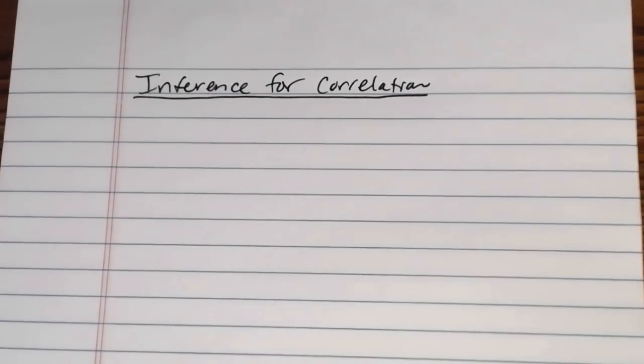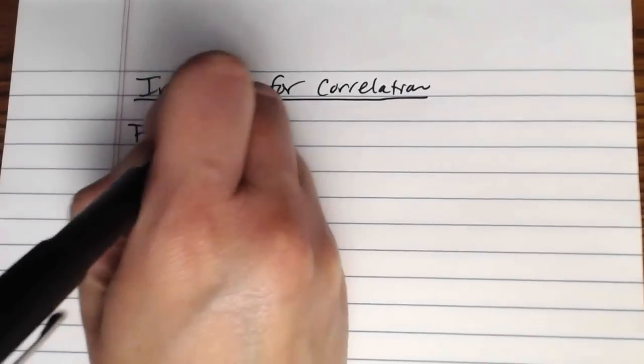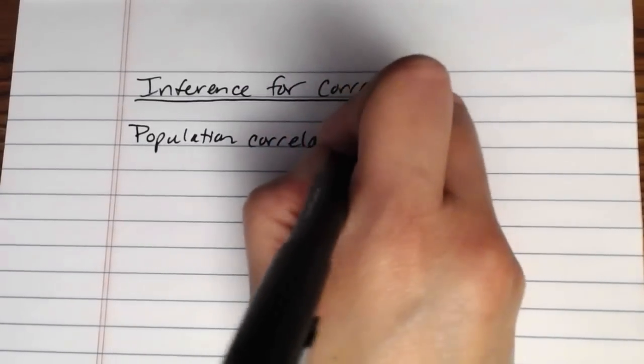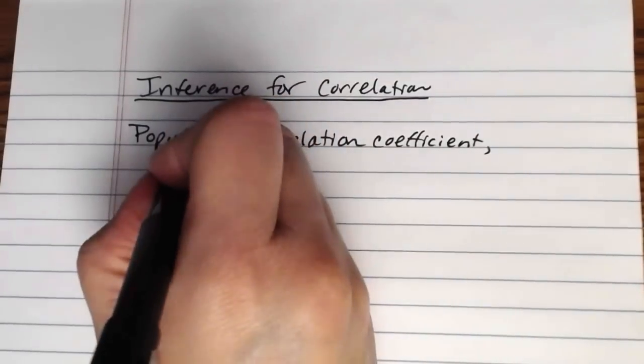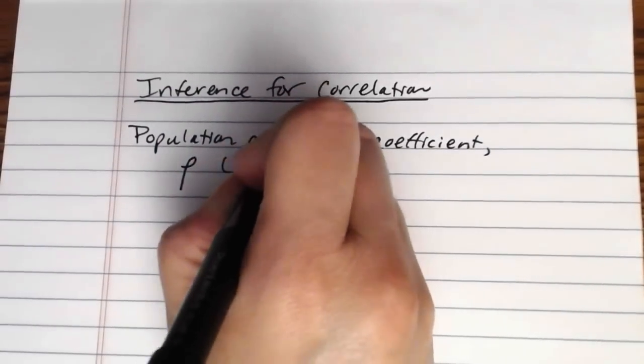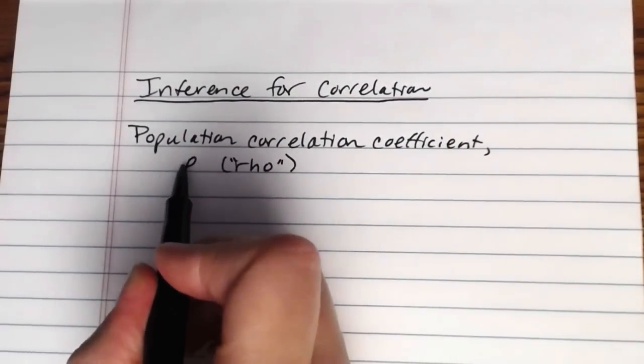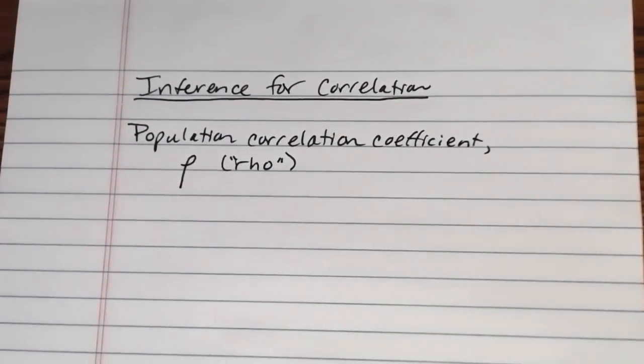We're going to focus on inference about the population correlation coefficient, which is the lowercase Greek letter rho. The symbol sort of looks like a p, except you don't start it the way that you would a p. It's got a little tail right here and then you swoop around and then down. If you want a better picture of it you can see it in your book, but this is rho.